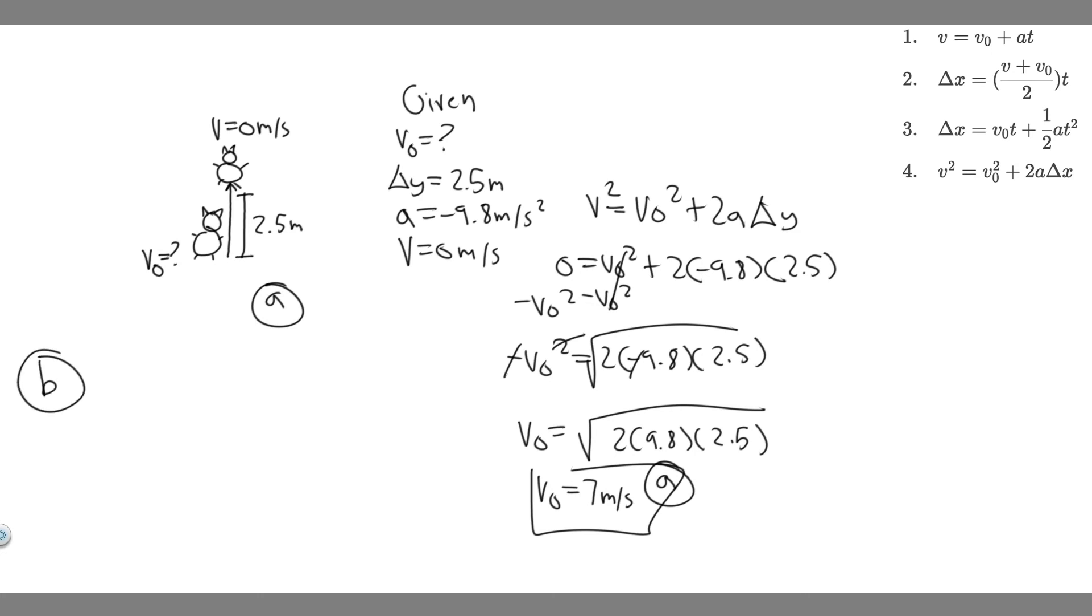Now let's move on to B. For B, we're trying to find how long it's in the air. So now we know its initial velocity is 7 meters per second. And now what we want to find is t, basically how long it's in the air, from the initial part to when its velocity is 0 or it travels 2.5 meters.